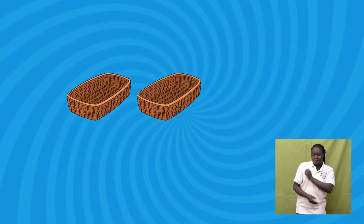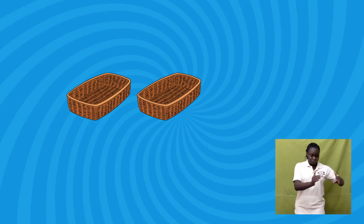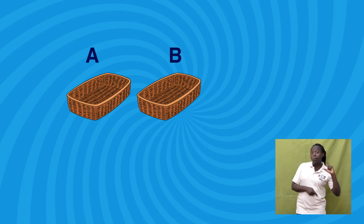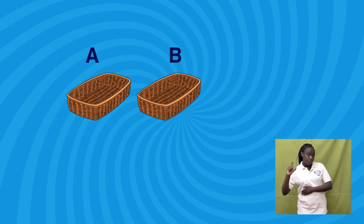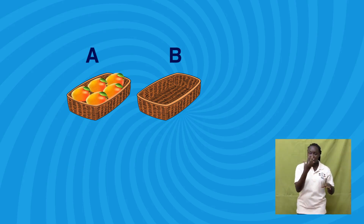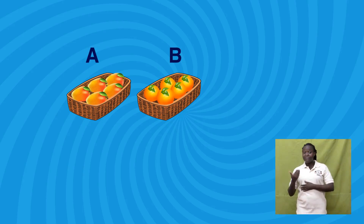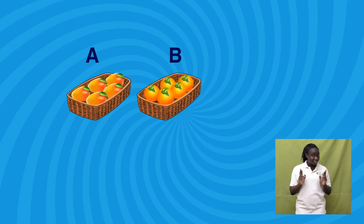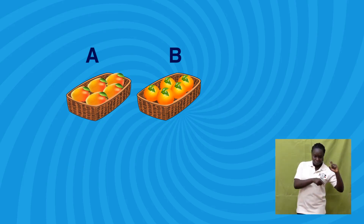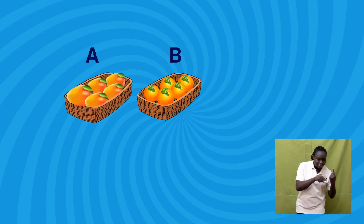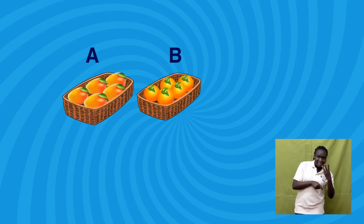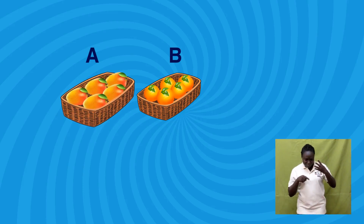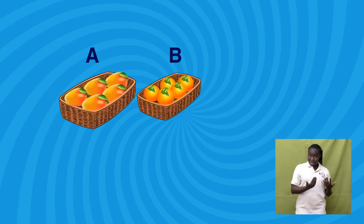Get two baskets. Call one basket A and the other basket B. Put five mangoes in basket A and five oranges in basket B. Together, let us count and find the number of members in each set. Set A — let us count together: one, two, three, four, five. Set A has five members.